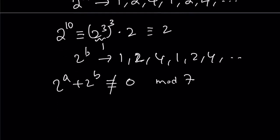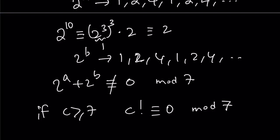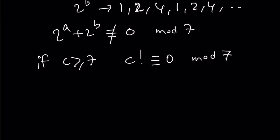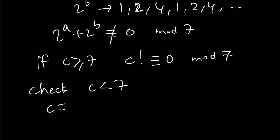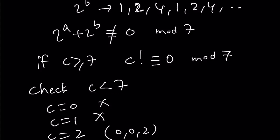But if c is greater than or equal to 7, then c factorial is going to be divisible by 7 and is 0 mod 7. Which means that for c values greater than or equal to 7, we do not have any solutions. That gives us an upper bound — we only need to check c values less than 7. So: for c equals 0, no solutions; for c equals 1, no solutions; and for c equals 2, we got (0, 0, 2) as a solution.